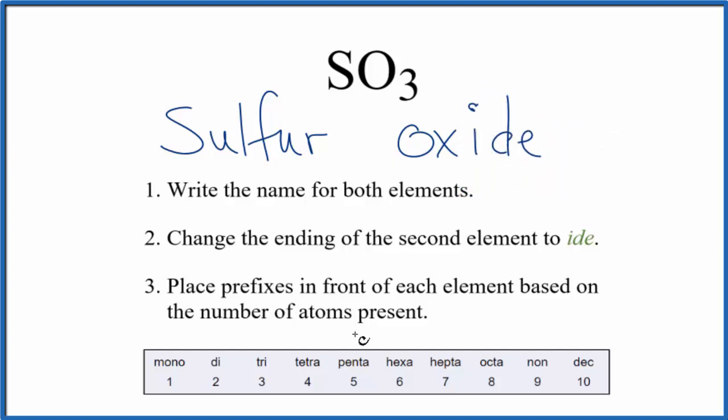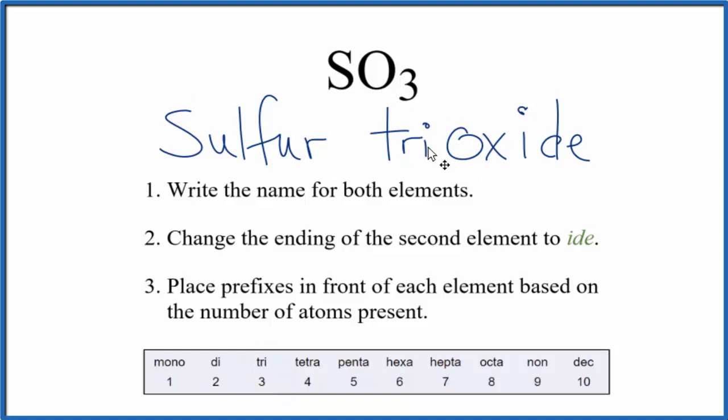But now we need to look at the prefixes here. So sulfur, there's just one of those. When we have just one of that first element here, we don't do anything, so we're just going to leave that as sulfur. But the oxygen, we have three of those, so we need to write tri in front of the oxide. So we write trioxide, and the name for SO3 is sulfur trioxide.